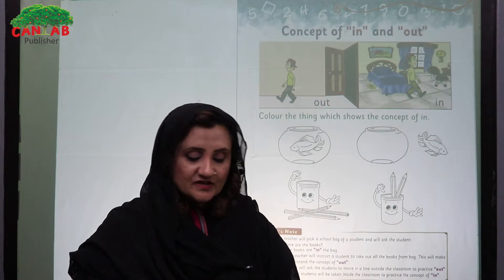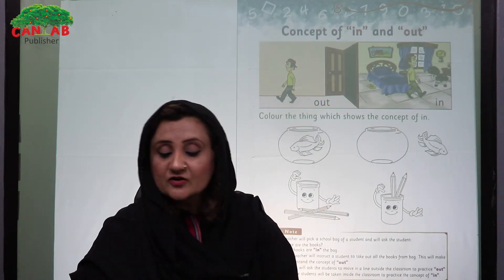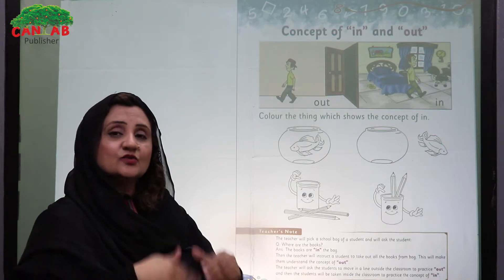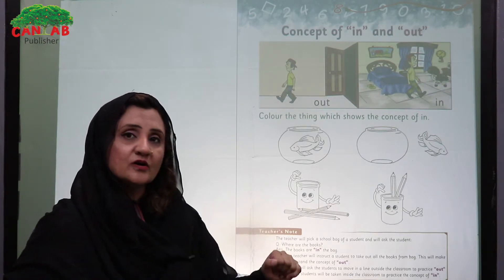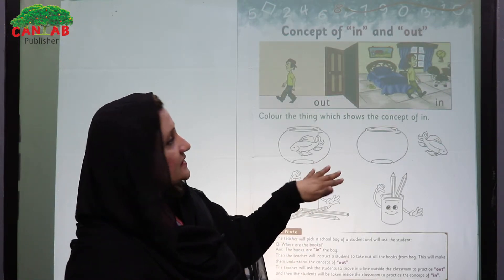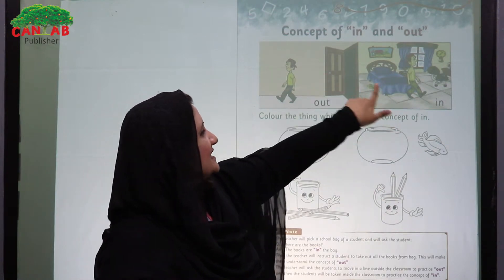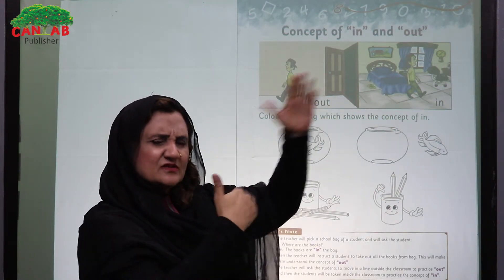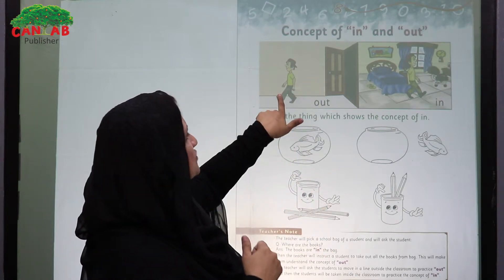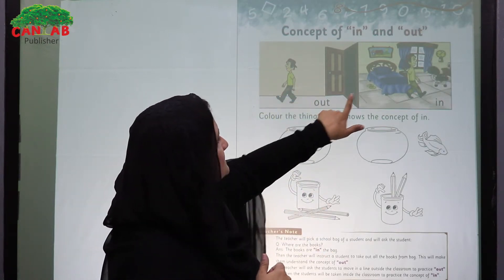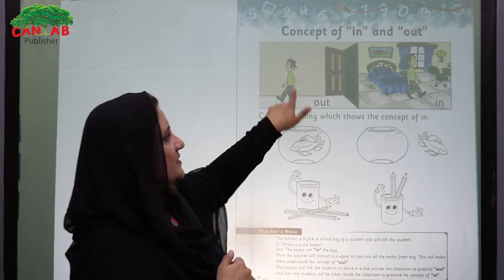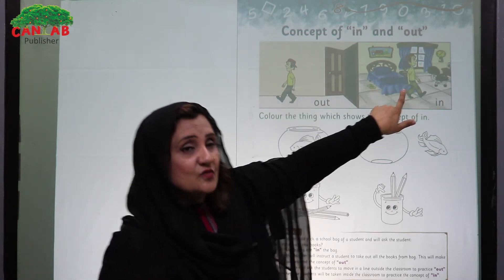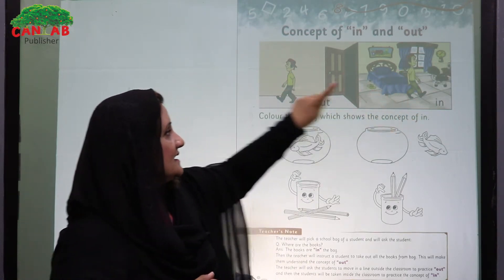After doing this activity and questioning with them, we have to invite them to read and to do the page of the book. We can ask them to look at the book and to explain these two pictures — what is the difference? Where is the boy? He is out of the room. And now where is the boy? He is in the room. In, out.